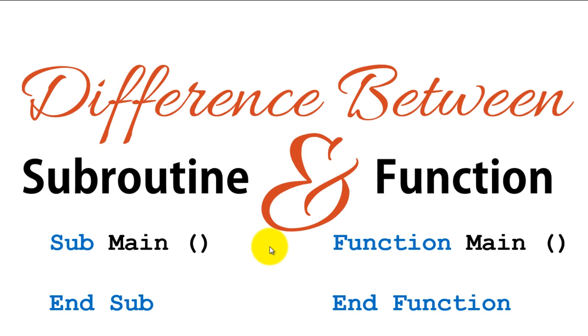This is a very important topic. If you have seen the previous videos, you would know that a subroutine is written as sub main and is ended as end sub, whereas a function is written as function main and it ends as end function, where main is the name of a subroutine or the function.